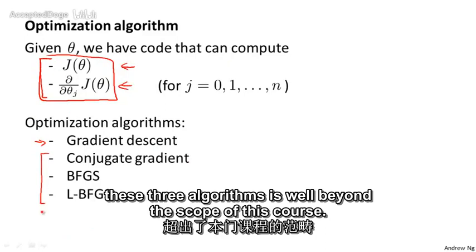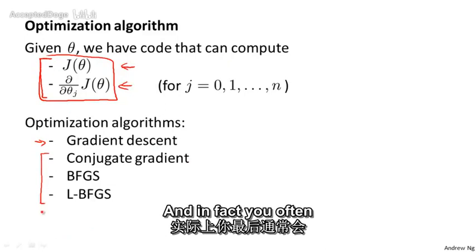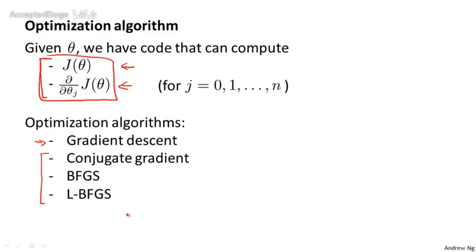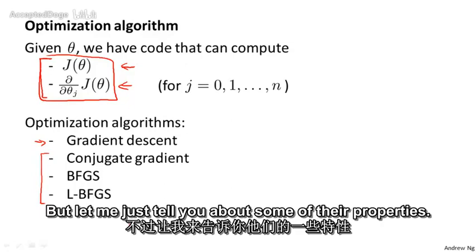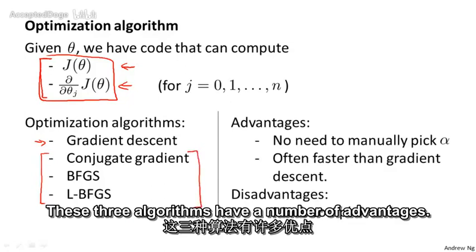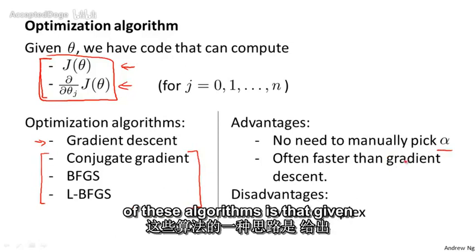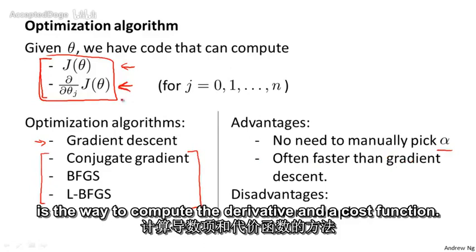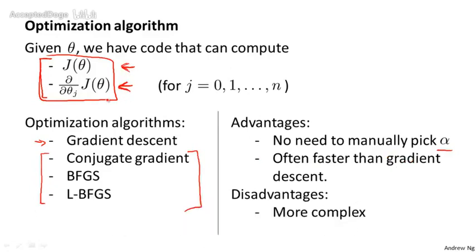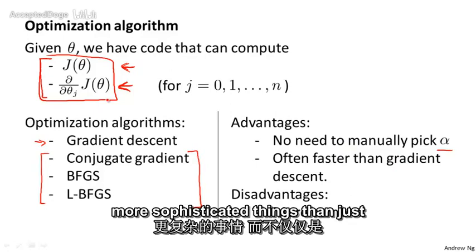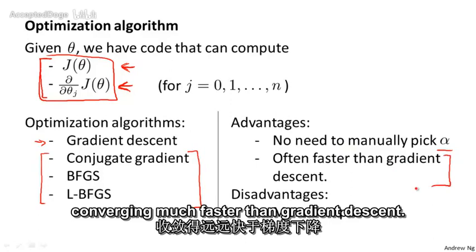The details of exactly what these three algorithms do is well beyond the scope of this course — you'd spend many days or weeks studying them in a class on advanced numerical computing. But let me tell you about some of their properties. One advantage is that with any of these algorithms, you usually do not need to manually pick the learning rate alpha. You can think of them as having a clever inner loop called a line search algorithm that automatically tries out different values for the learning rate alpha, picks a good one, and can even pick a different learning rate for every iteration. These algorithms also do more sophisticated things beyond just picking a good learning rate, and so they often end up converging much faster than gradient descent.